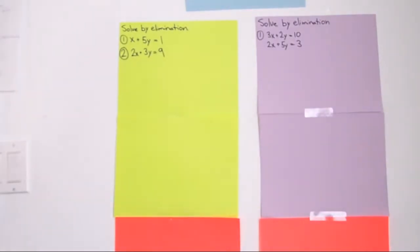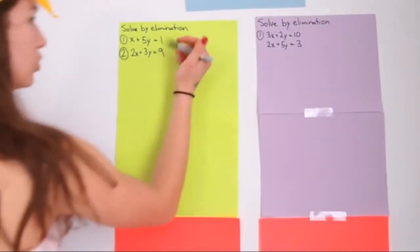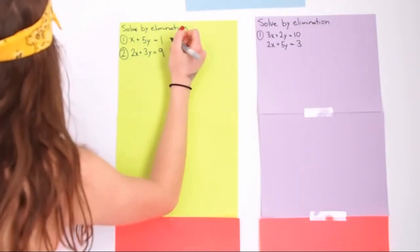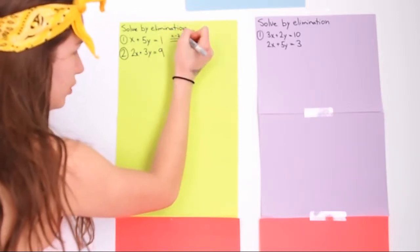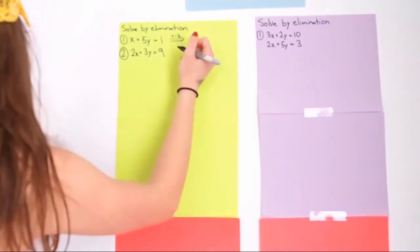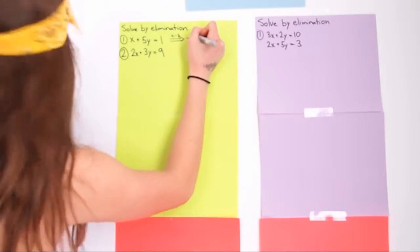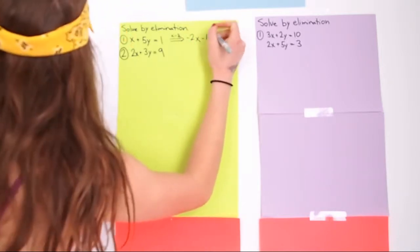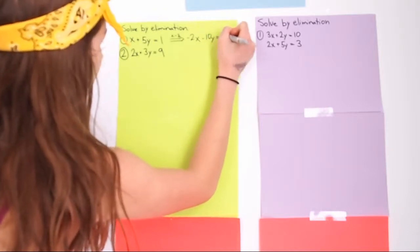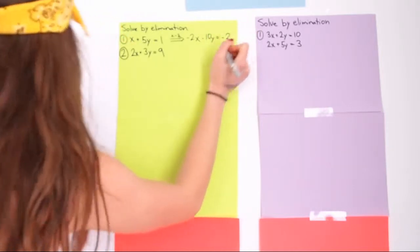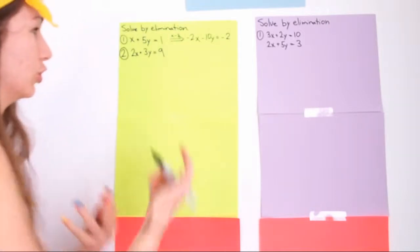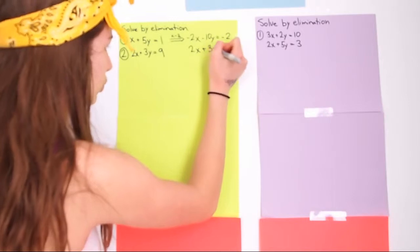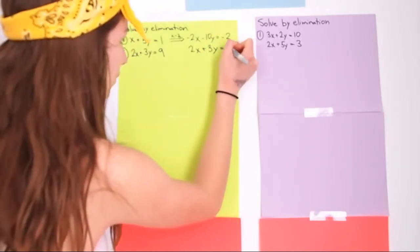Now you have to try to eliminate a variable. So we'll times this equation by negative 2, which gives you negative 2x minus 10y equals negative 2. And then this equation stays exactly the same: 2x plus 3y equals negative 1.